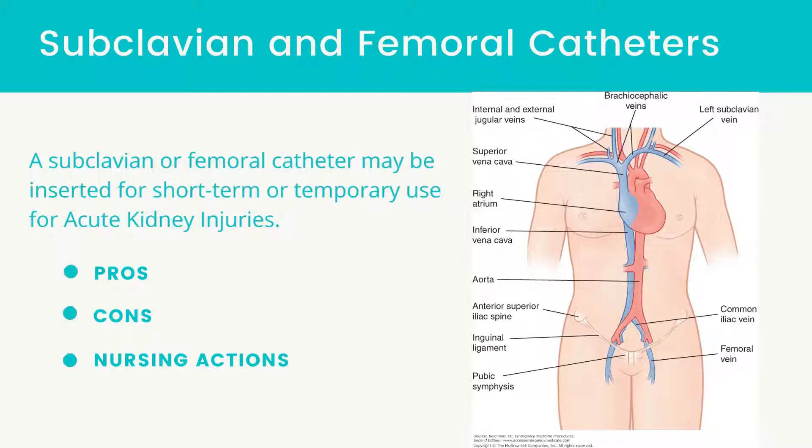Femoral vein catheter. Interventions for a femoral vein catheter include assessing the extremity for circulation, temperature, and pulses. Prevent pulling or disconnecting the catheter during treatment, avoid kinks or occlusions, and let the patient know that they should not sit up more than 45 degrees or lean forward during treatment.